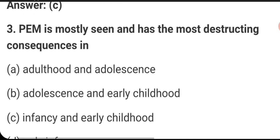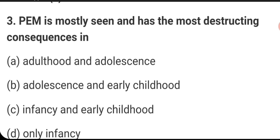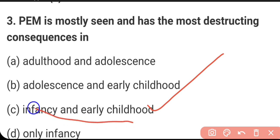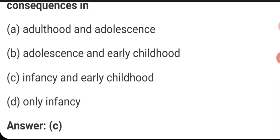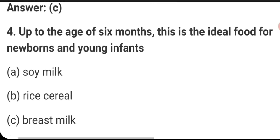PEM is mostly seen and has the most destructive consequences when? In infancy and early childhood, because during childhood different kinds of growth are occurring — brain development and other developments. If the body cannot get proper energy or protein during that time, it is a major problem. The right answer is C: infancy and early childhood.